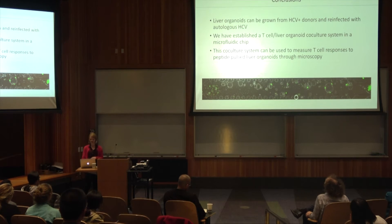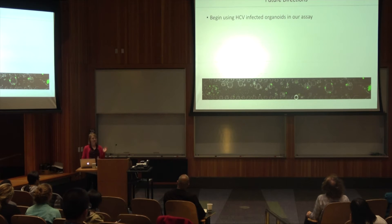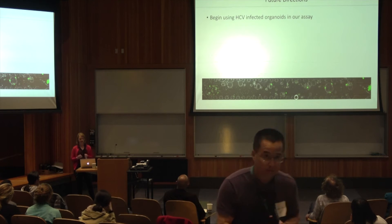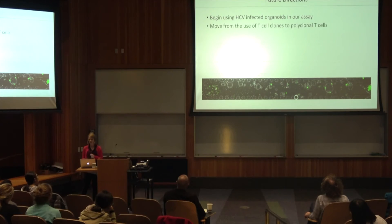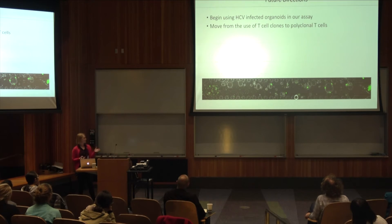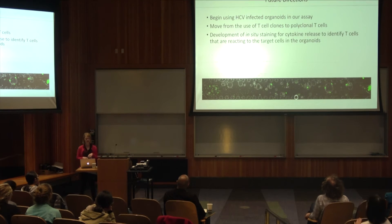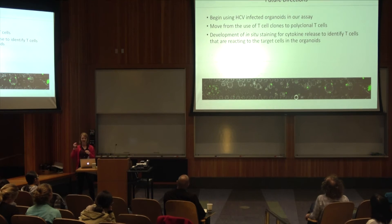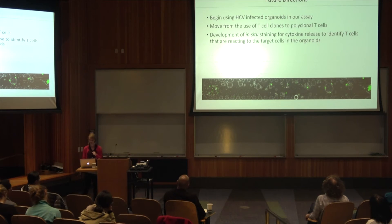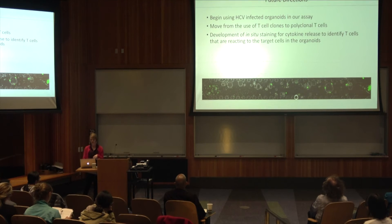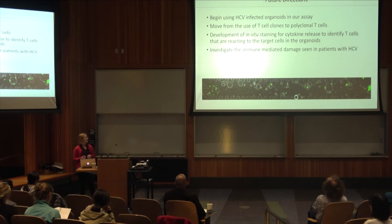We're very excited about all the future directions for this project. The first is we want to begin using HCV-infected organoids in our assays instead of just this peptide-pulsing system. We want to move from the use of T cell clones to polyclonal T cells, because we actually have matched PBMCs from the donors we've grown our liver organoids from. We're working on developing in-situ staining for cytokine release in the chip so you can identify if the T cell is close to the organoid and releasing cytokines, instead of a more bulk approach by flow cytometry where you lose that spatial information. There are also biological questions like escape mutants and immune-mediated damage seen in patients with HCV in their liver.